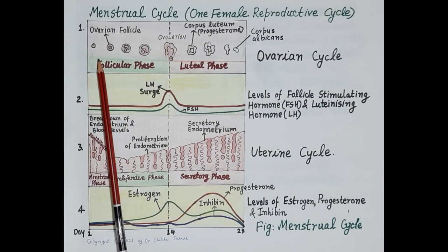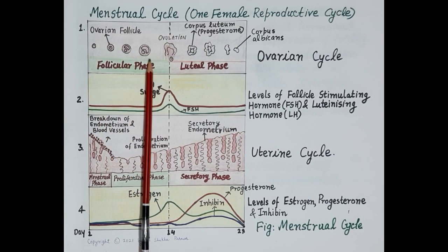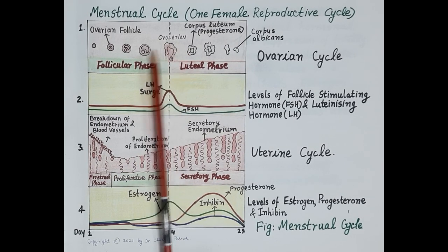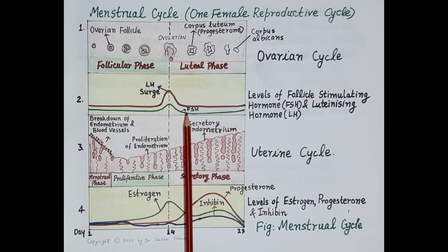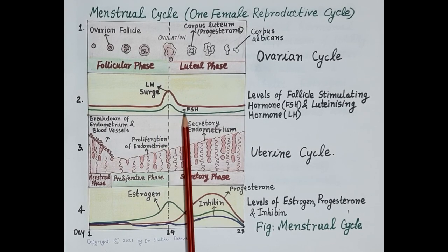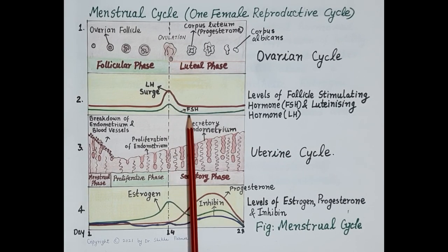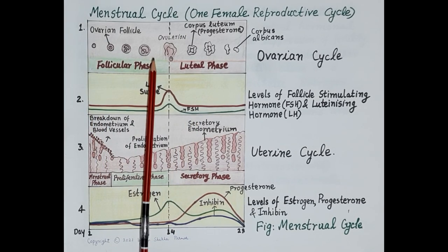The ovaries consist of immature ovarian follicles; on average, only one follicle develops every month. This developed ovarian follicle releases the mature egg on day 14 by the process of ovulation. Follicle stimulating hormone (FSH) is essential for the development of the ovarian follicle, and suppression of FSH inhibits follicle development, thereby preventing ovulation.